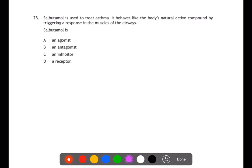Question 23. Salbutamol is used to treat asthma. It behaves like the body's natural active compound by triggering a response in the muscles of the airway. What kind of compound is salbutamol? If salbutamol triggers the body's natural response, then it's acting as an agonist in the body. If it was to block the response, it would be an antagonist. And the receptor is where it binds.